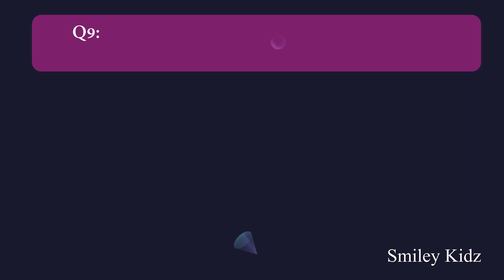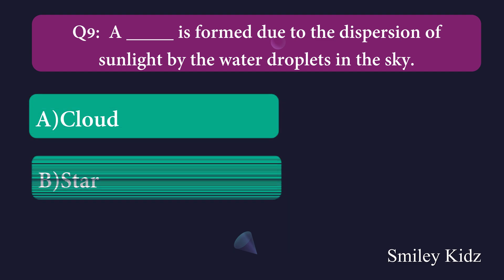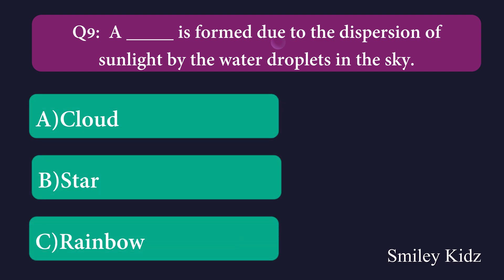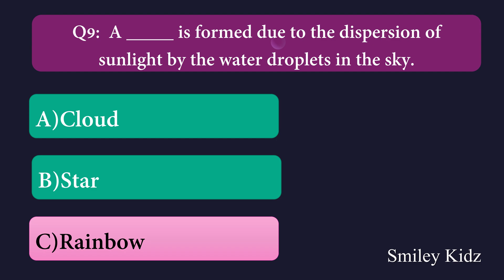Question number nine: A dash is formed due to the dispersion of sunlight by the water droplets in the sky. Option A: cloud, Option B: star, Option C: rainbow. The right answer is rainbow. A rainbow is formed due to the dispersion of sunlight by the water droplets in the sky.